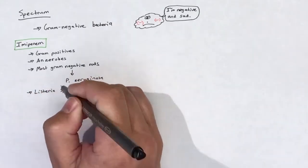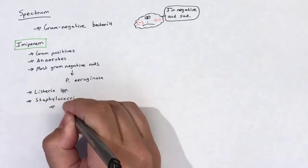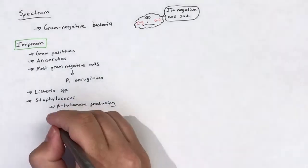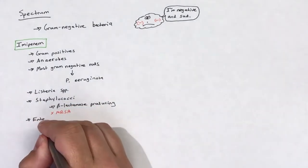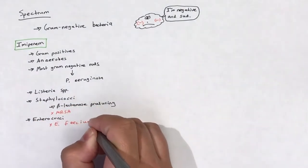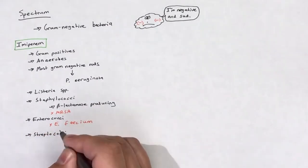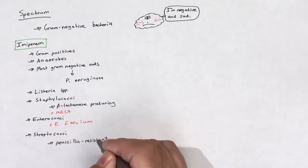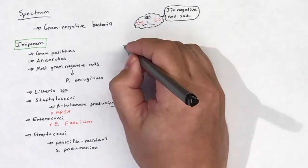Some examples of susceptible bacteria include Listeria species, staphylococci including beta-lactamase-producing strains but excluding MRSA, enterococci excluding Enterococcus faecium, and streptococci including penicillin-resistant S. pneumoniae.